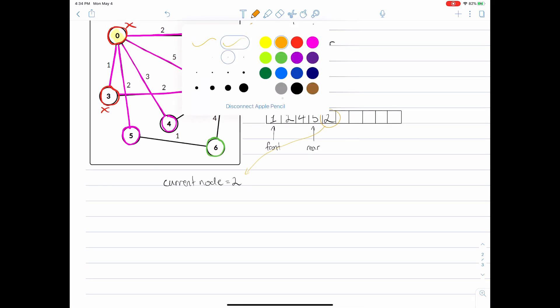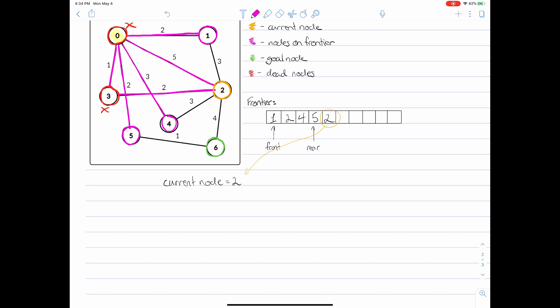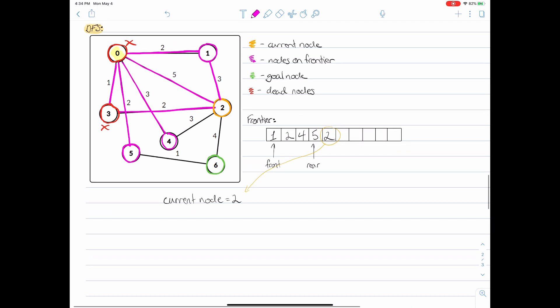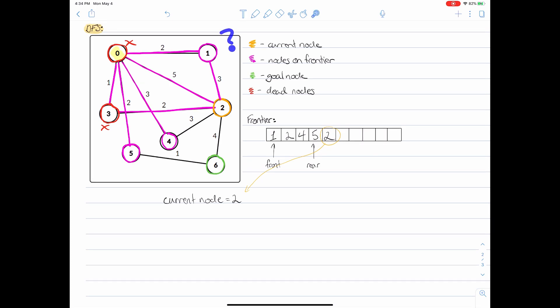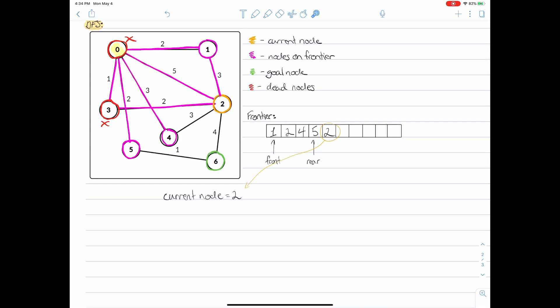So from node two we expand all of the successors. First we expand to the first node. And then we pop the question: is this node the goal node? Well clearly it isn't. So we add this node to our frontier. Slide over our rear index again and add number one to the frontier. Then we continue expanding our node two. We look at the goal node right here, node six. We ask: is this node the goal node? Well it is. So therefore we have successfully found a path between the starting node and the ending node.